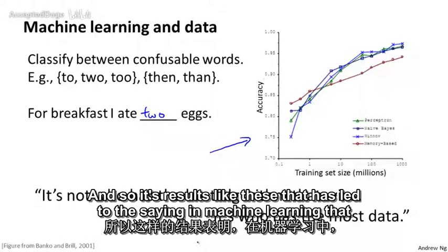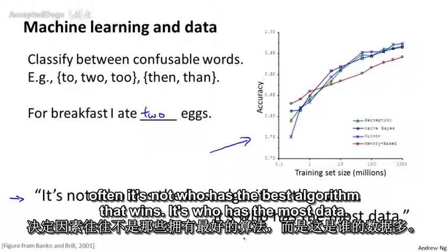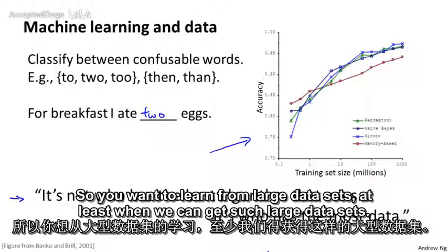And so it's results like these that has led to the saying in machine learning that often it's not who has the best algorithm that wins, it's who has the most data. So we want to learn from large data sets, at least when we can get such large data sets.